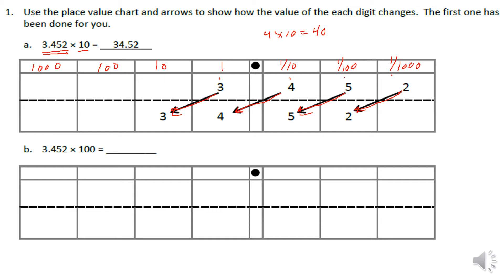In part B, we place 3 and 452 thousandths into the place value chart again — ones, tens, hundreds, thousands on the left, and tenths, hundredths, thousandths on the right. This time we're multiplying by 100, and 100 is 10 times 10, so instead of moving one place value we're going to be moving two place values.